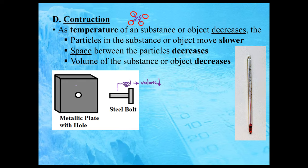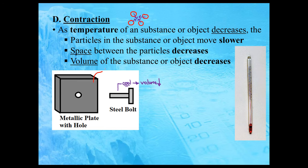Another thing you could do, if you wanted to get this bolt into the hole that did not fit, is take the metallic plate and heat it up. What happens when you heat it up? The volume of the plate is going to increase. Importantly, if the plate's volume increases, that actually increases the size of the hole. So the hole gets a little bit bigger, and then you could fit the steel bolt in place. So there are a couple of ways you could actually get that bolt into that hole.